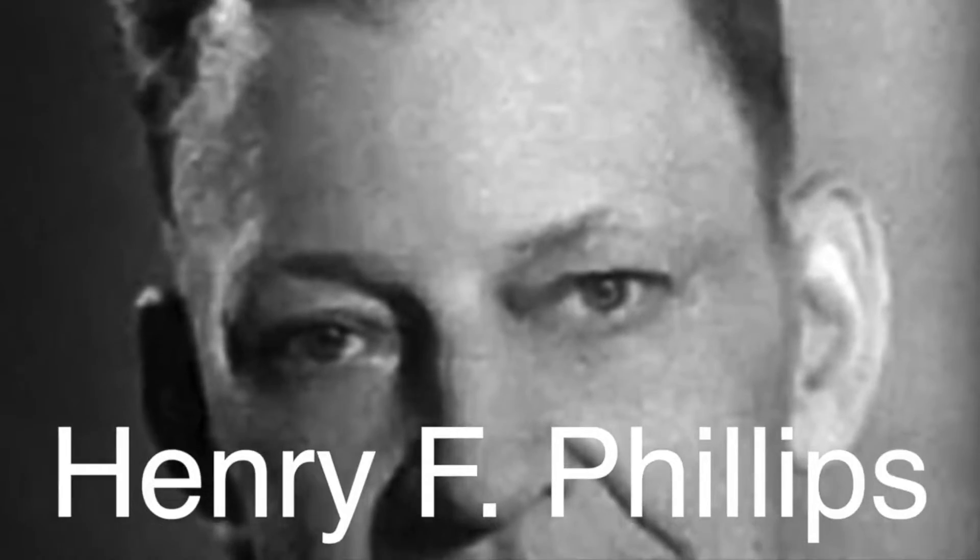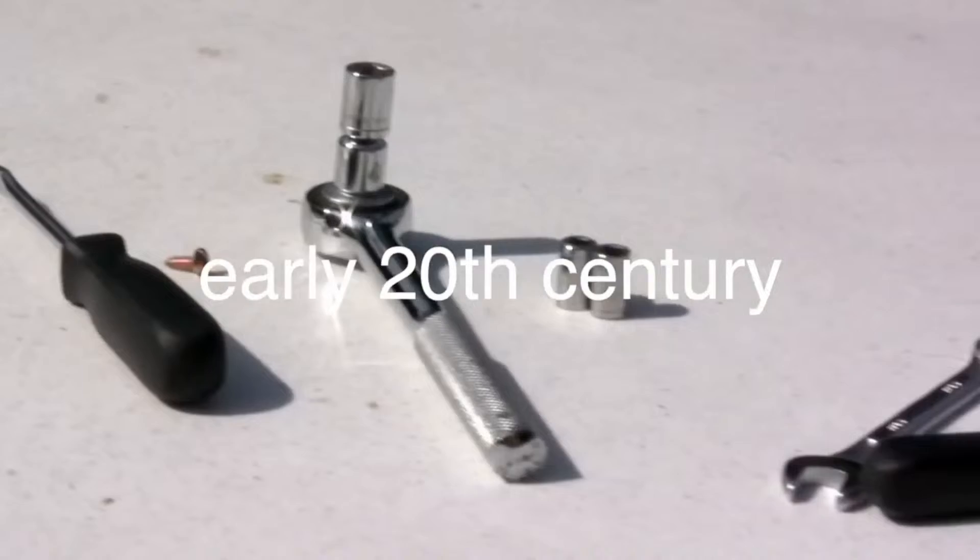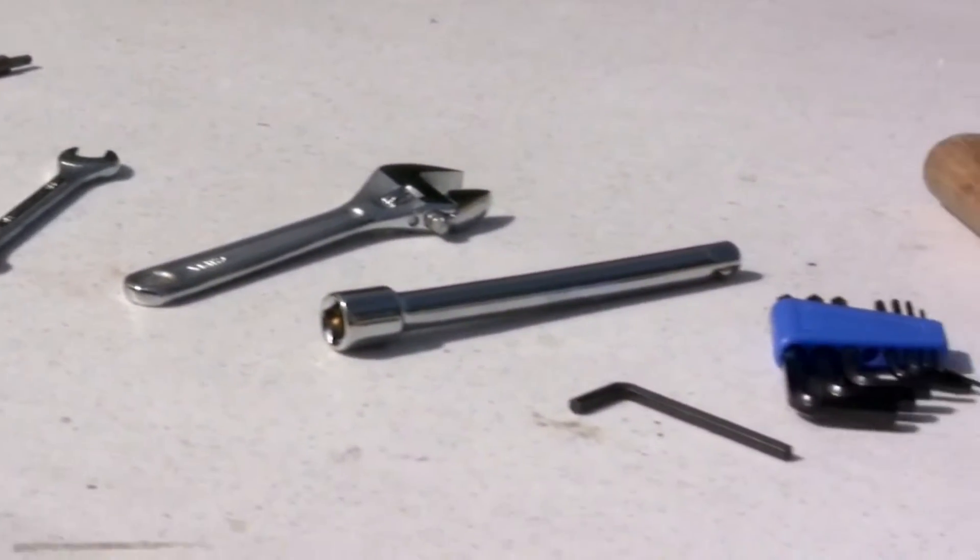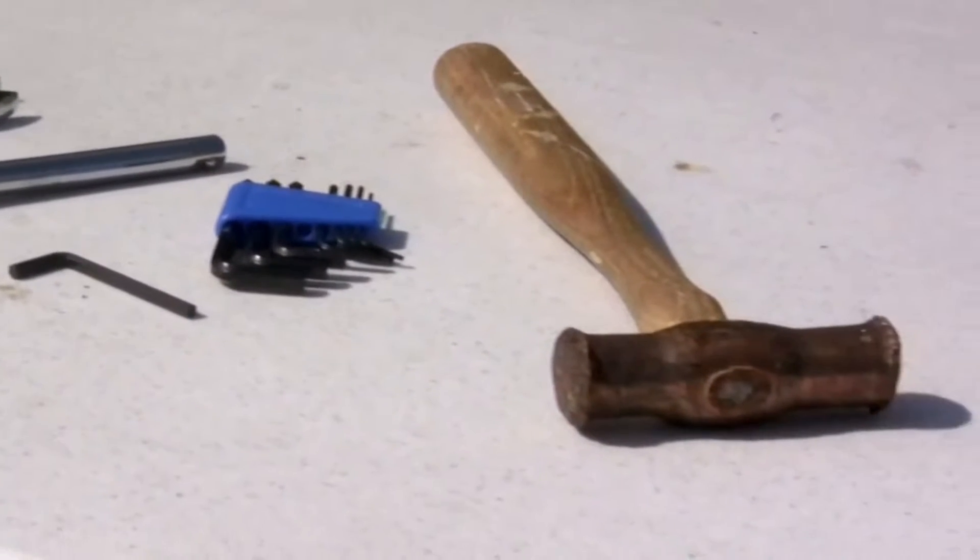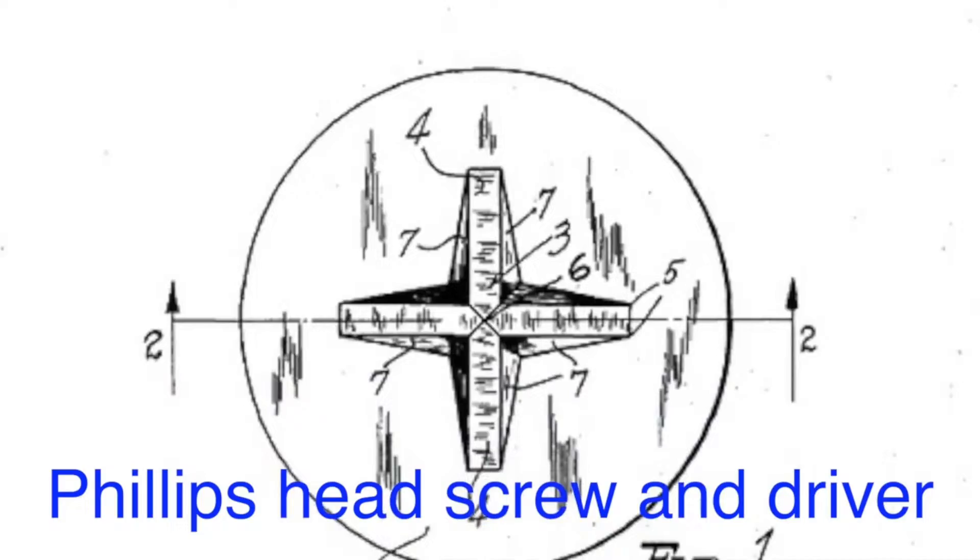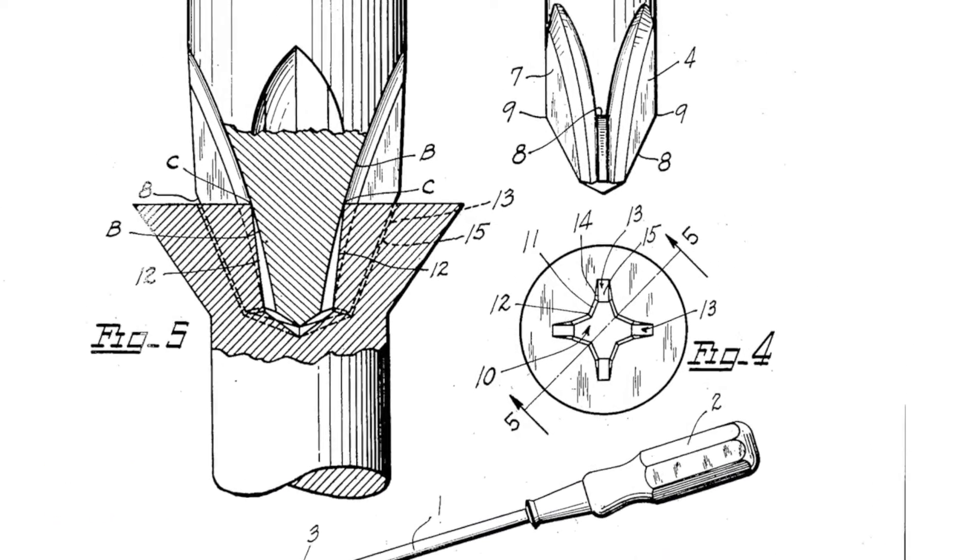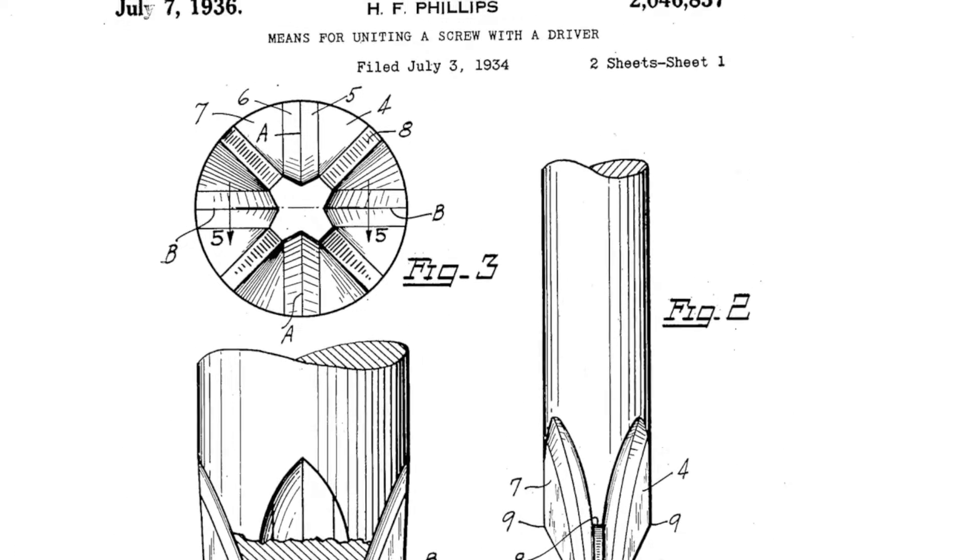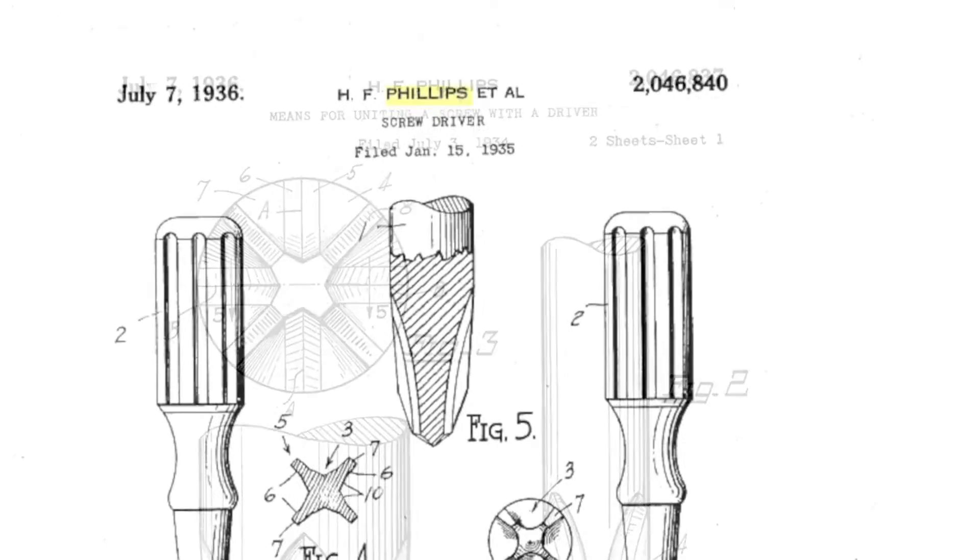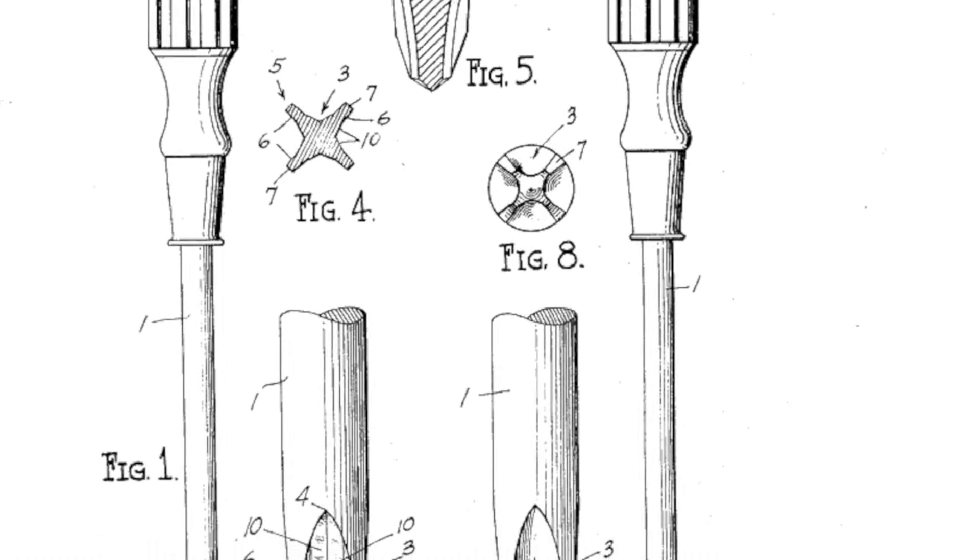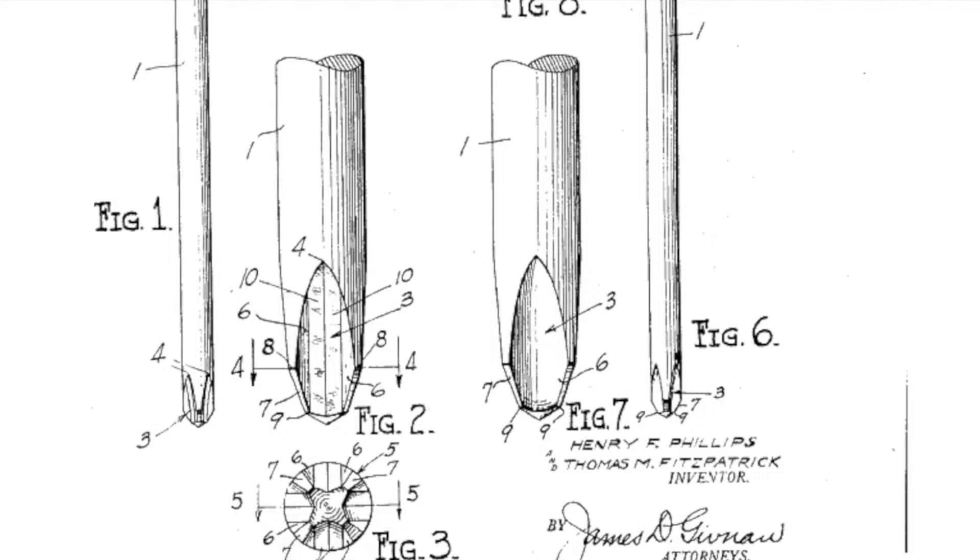One notable figure in the history of the flathead screwdriver is Henry F. Phillips. In the early 20th century, Phillips recognized the limitations of the flathead design, particularly in industrial applications where speed and efficiency were critical. He invented the Phillips head screw and driver, which allowed for more torque and reduced the risk of the driver slipping out of the screw head. Despite this innovation, the flathead screwdriver remained an important tool, especially in applications where the Phillips head's self-centering design was not necessary, or where flathead screws were already in use.